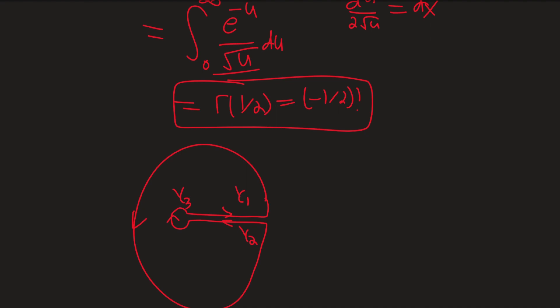We know that the whole line integral around this contour is going to be equal to zero, as there are just no poles actually inside this contour. The only pole is enclosed by gamma three, which we will be exploiting shortly. But for now, let's focus on the integrals over gamma one and gamma two.